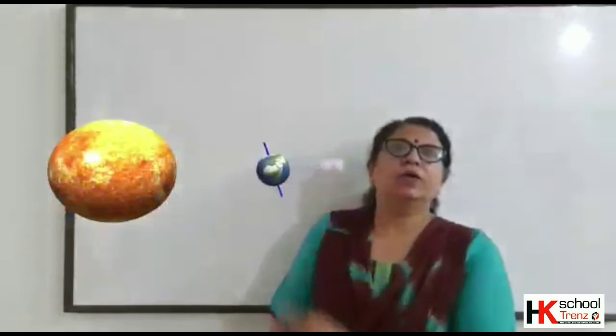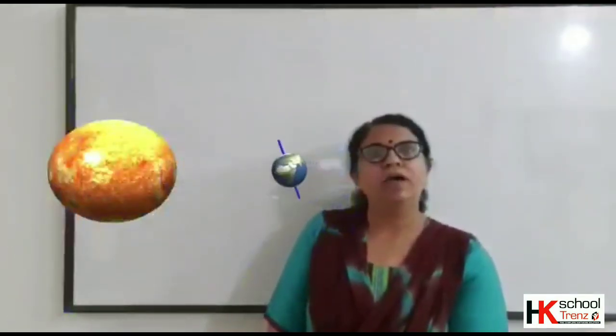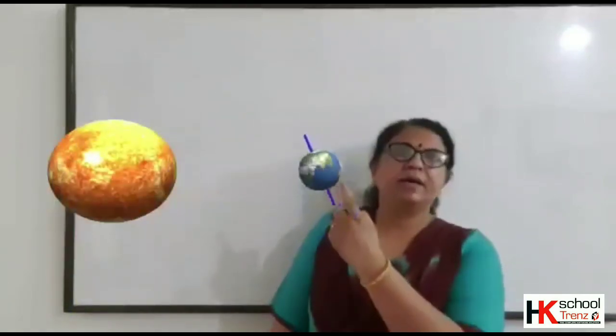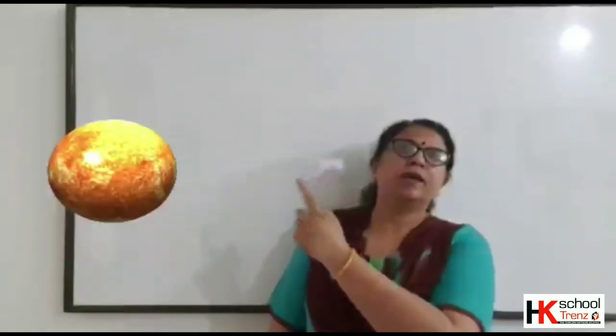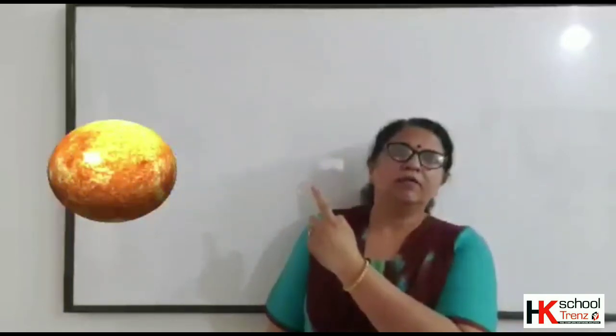Children, earth rotates on its own axis that is called rotation. And another movement, revolution, is the movement you can see here where the earth is moving around the sun. It is called the revolution.